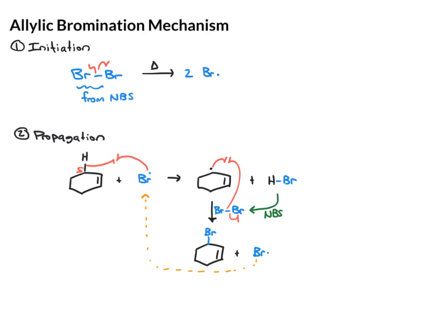Step three, which we have to include, isn't so much productive, but it is important. It's the termination. This could be any two radical species coming together to give a product. Let's just keep it simple. We'll draw one termination possibility. If two bromine radicals come together, they give Br2. That's a termination step.